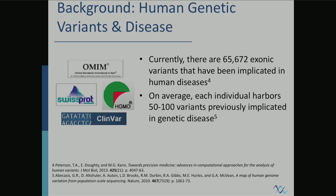Here's an interesting trivia: when you look at any individual and the number of variants they have, there are at least 50 to 100 variants that have been previously implicated in genetic diseases. This is part of the challenge we face as a scientific community — how do we deliver information about genetic variants that have implications for disease to the general public? There are ethical concerns, and some people might not want to know things that are not actionable. Your genome may have variants associated to disease, and you might die without any diseases, but you might still find surprises in your genome.